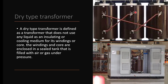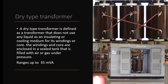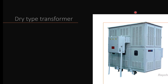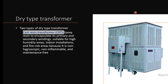The first type is the dry type transformer. As the name suggests, it does not use any oil or liquid for cooling or insulation. The windings are enclosed in a sealed tank filled with air or gas under pressure. If the transformer is located inside a building, a dry type transformer is used. It is rated up to 35 MVA. Within dry type transformers, there are two types. The first is the cast resin transformer, which is very commonly used. Epoxy resin is used between the primary and secondary winding as an insulating medium. It can be used in high humidity areas, indoor installations, and fire risk areas because it is non-hygroscopic, non-inflammable, and maintenance-free.